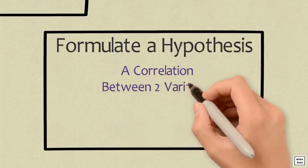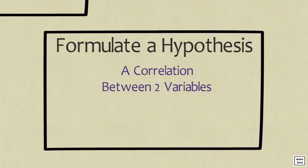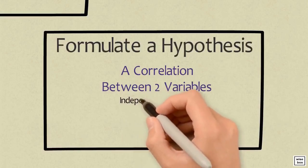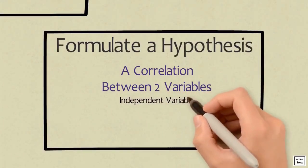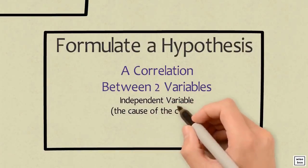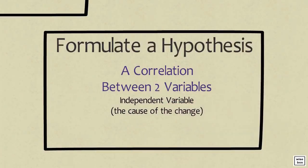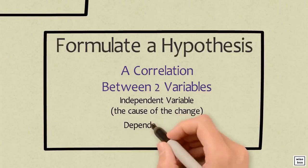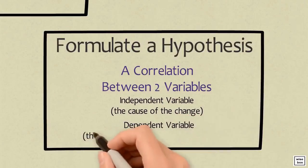A hypothesis makes a correlation between two variables. One variable tends to predict how another variable will change. These two variables are referred to as the independent and dependent variables. The independent variable is the cause of the change. The dependent variable is the effect, or the thing that has changed.